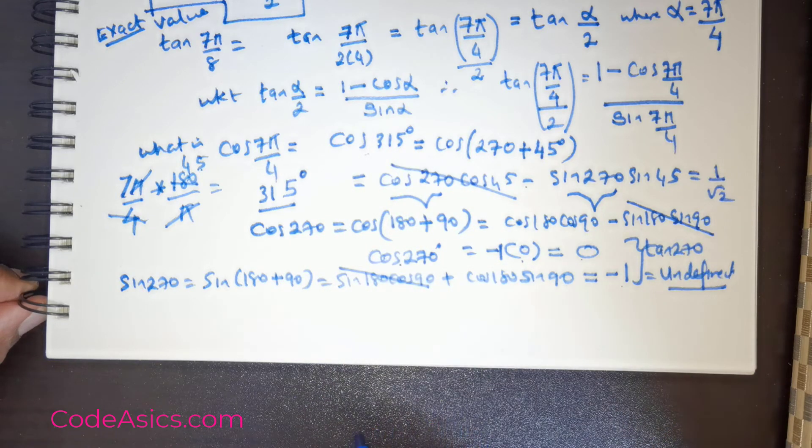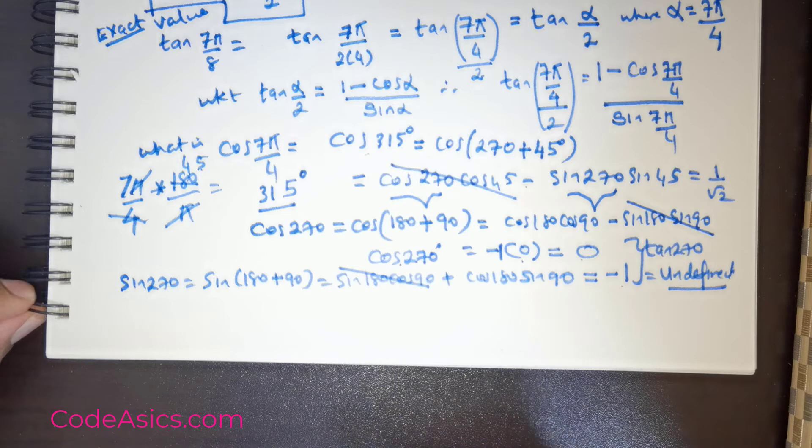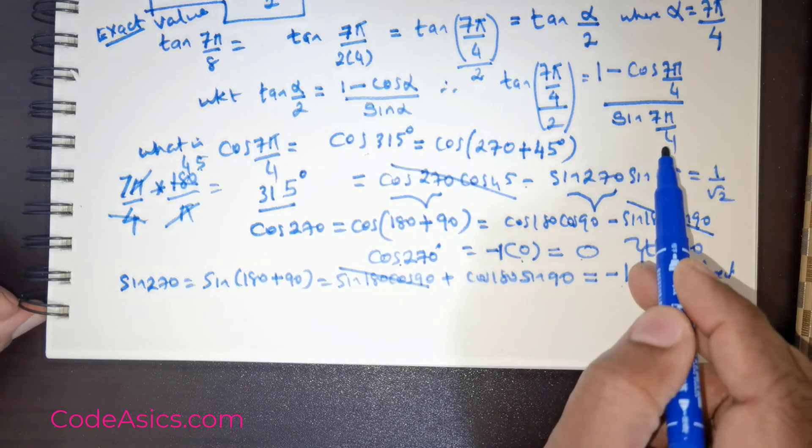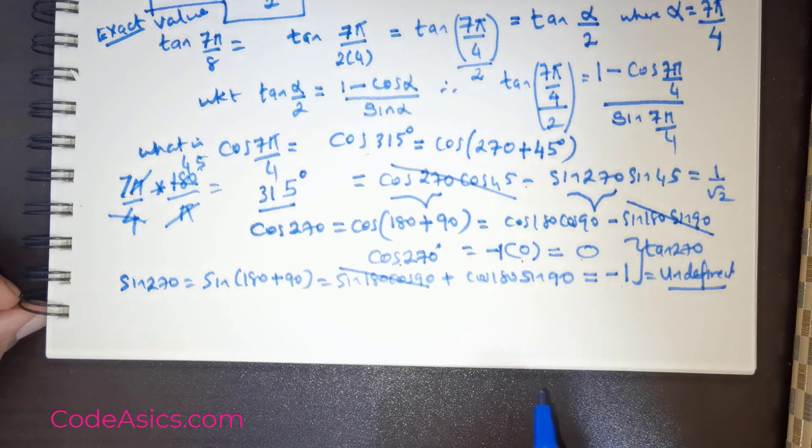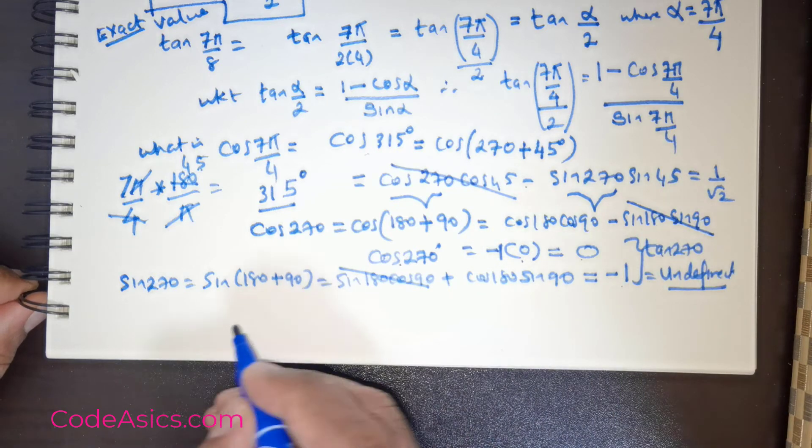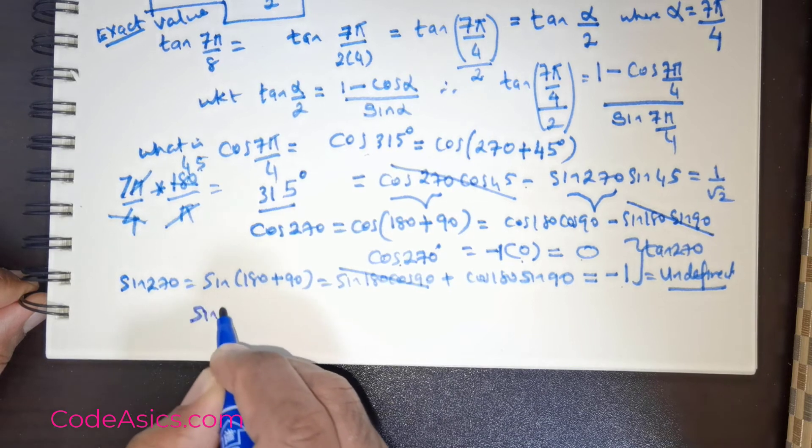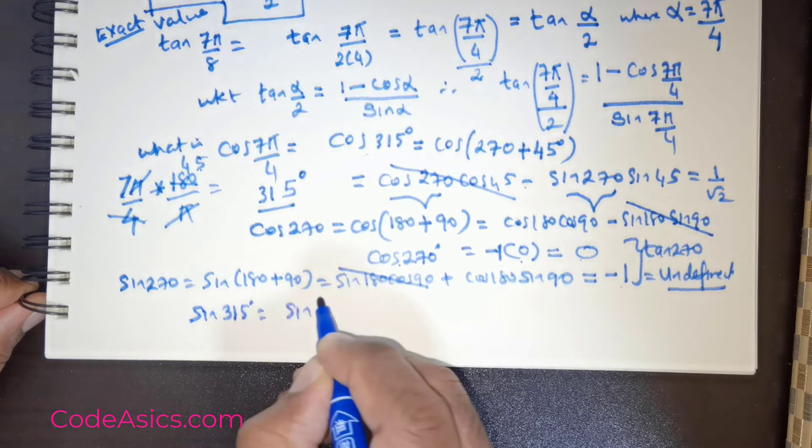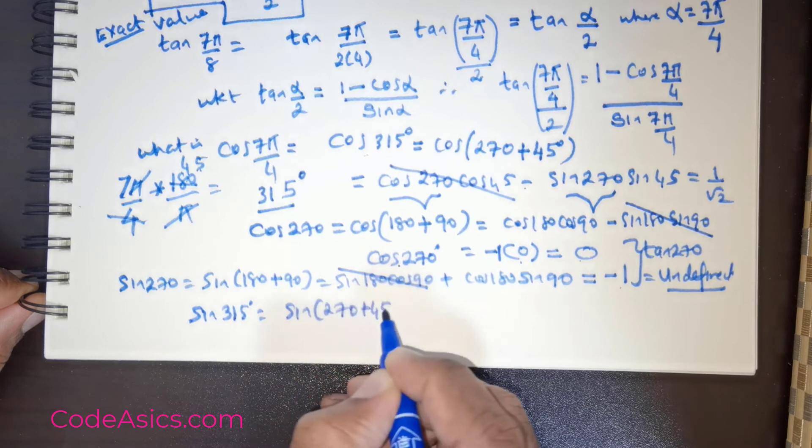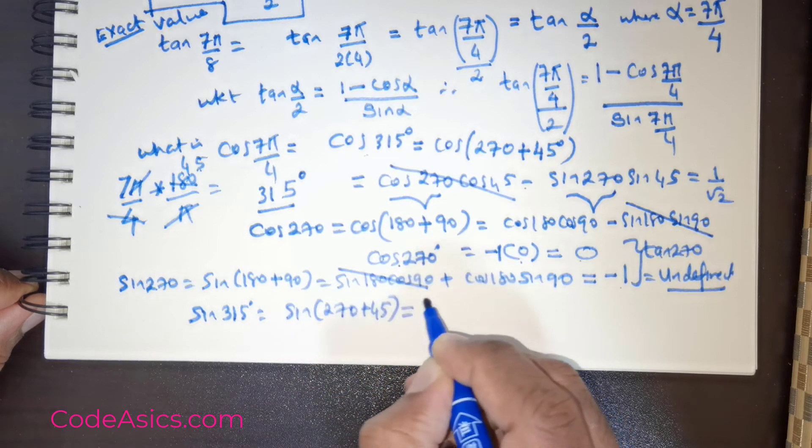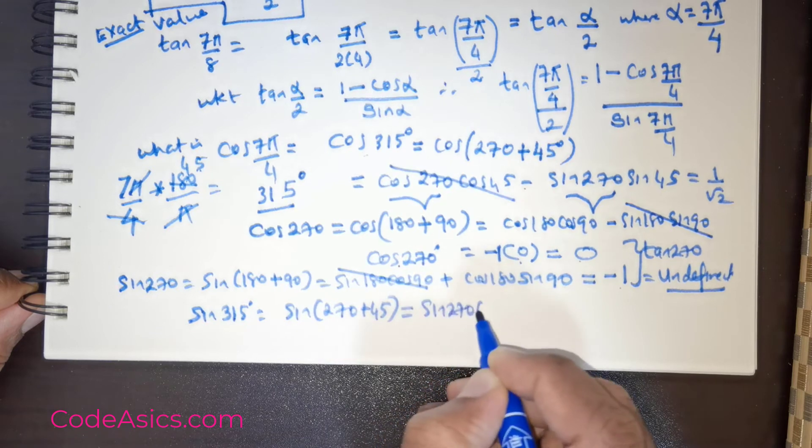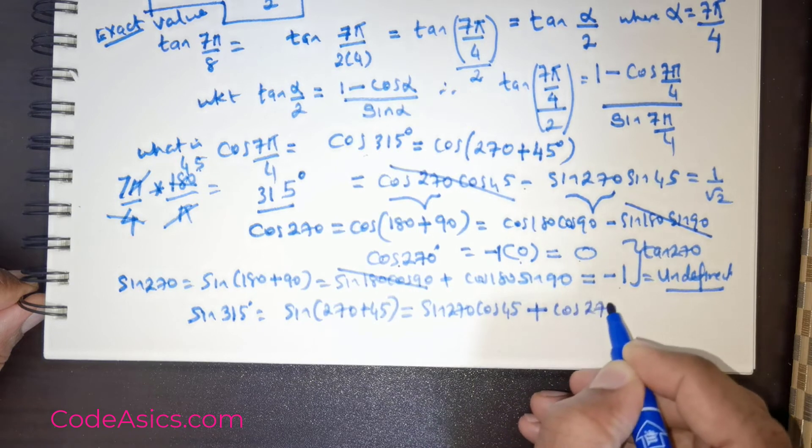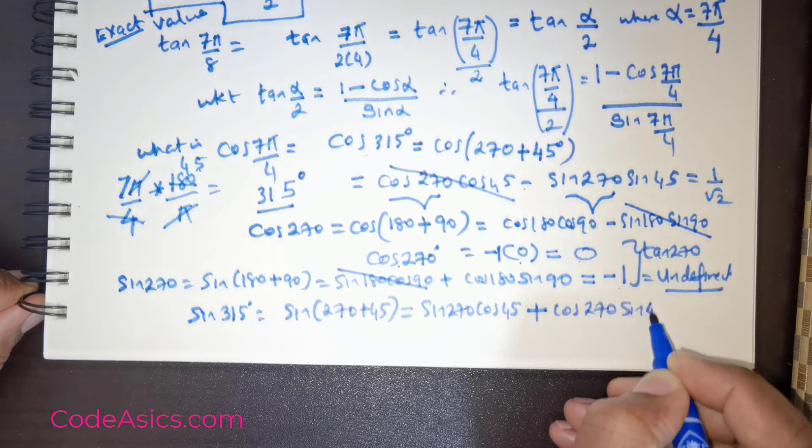Now having got the value of cos 315 degrees, we will also get the value of sin 315 degrees. What is sin 315? Sin 315 is nothing but sin 270 plus 45, which can be rewritten as sin 270 cos 45 plus cos 270 sin 45.